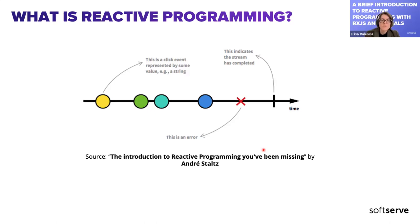Reactive programming relies heavily on observables for its core work, although it doesn't necessarily use observables in all cases. The key idea is that we have subscriptions to different asynchronous events, and we are reacting to those changes.